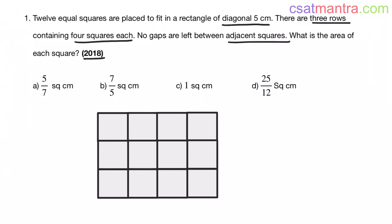This is the rectangle we are talking in question. It has 3 rows and 4 squares each row, and diagonal of this rectangle is equal to 5 cm.